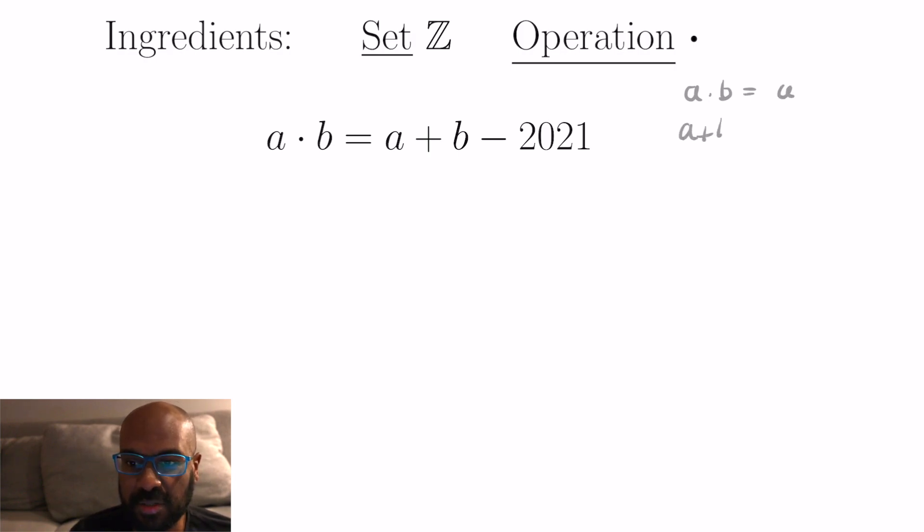Okay so the first thing we want to do is figure out what the identity could be. So let's say b is the identity, then we'd have a dot b is a no matter what a we choose. So a plus b minus 2021 would have to be a again. And that forces b to be 2021. So that's our candidate for an identity. So let's actually write that down. So we'll let e be 2021.